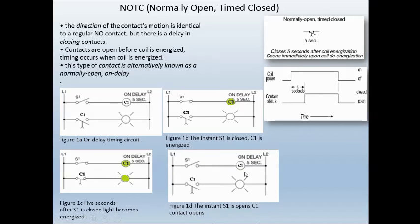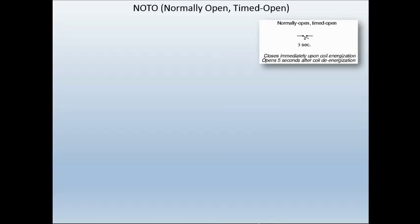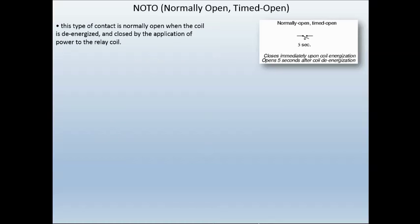When the five second delay is complete, after five seconds, you can see the contact status is now closed and the light comes on. If we then open that switch, it de-energizes our coil, and at the exact same time the contact status goes open. So, showing the full function of the normally open timed closed: when we energize the coil, the contact will close five seconds after the coil has been energized. But when we de-energize the coil, the C1 contact will open right away.